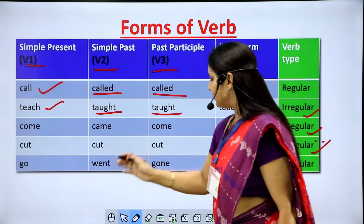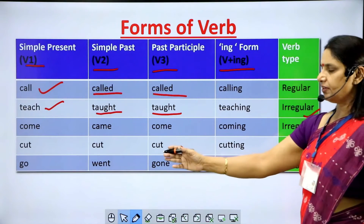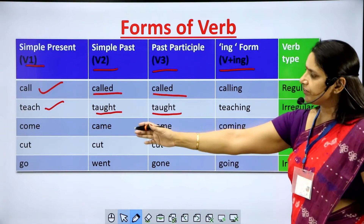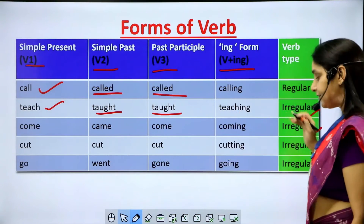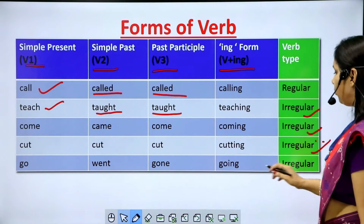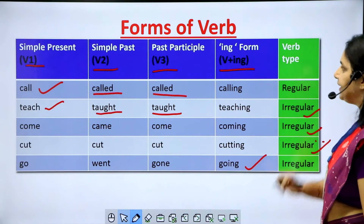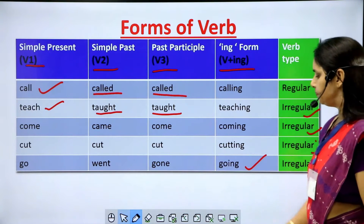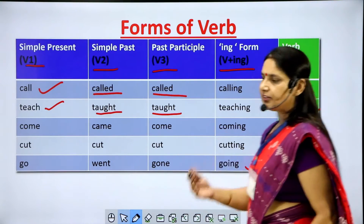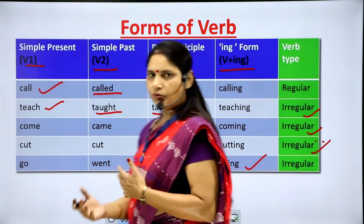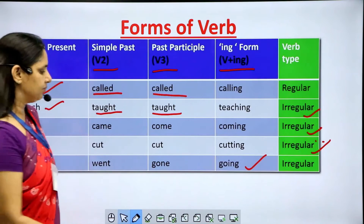'Go', 'went', 'gone' — these are different from the first form and 'ed' is not used, so 'go' is an irregular verb. 'Going' is the ing form. You must learn the different forms of verbs so that you may write sentences correctly.